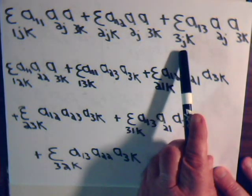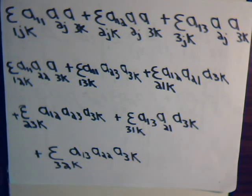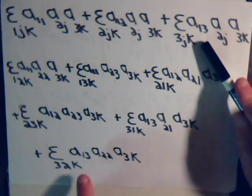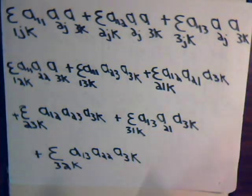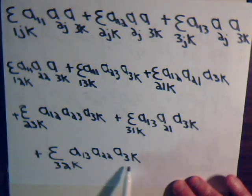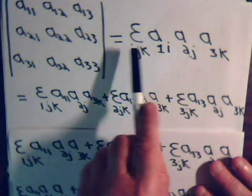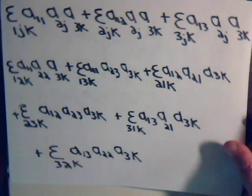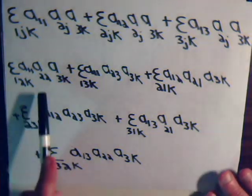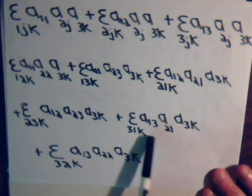Now we have the third term: epsilon 3, j, k. j can take on values one, two, and three. When j is one, we have epsilon 3, 1, k times A13 and A21 — that stays the same. When j takes on the value two — that's not repeated, no problem there — we have epsilon 3, 2, k times A13 and A22 — j took on the value of two right here, that stays the same. So we summed over the j's and that gives us six terms in total.